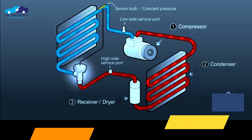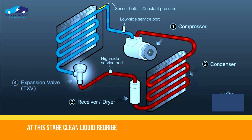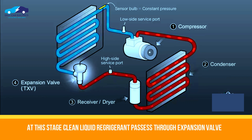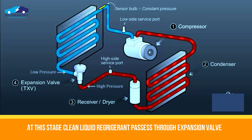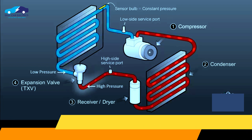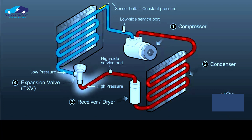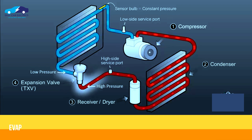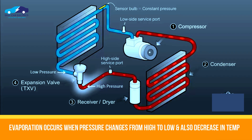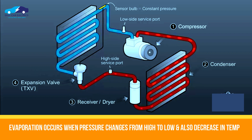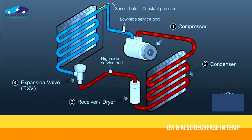At this stage, the cleaned liquid refrigerant coming from the receiver dryer passes into the expansion valve orifice tube. Evaporation occurs when pressure changes from the high-pressure side to the low-pressure side, with a decrease in temperature.